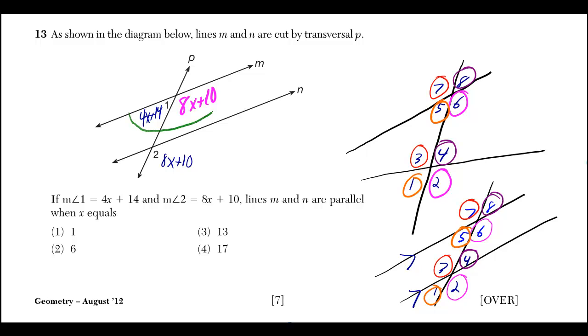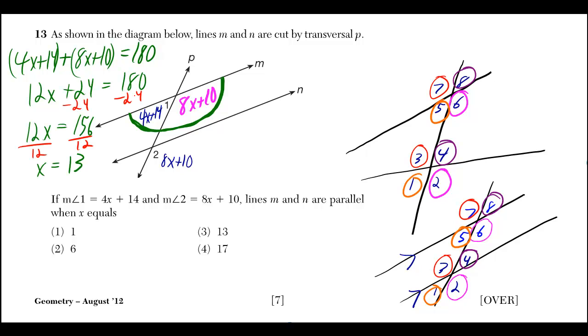Those two angles being adjacent and on the same line means they'll add up to be half a circle, and half a circle is 180 degrees. So 4x plus 14 plus 8x plus 10, when I add them up must come out to 180. So 12x plus 24 must equal 180, which means 12x is equal to 156, which means x must be 13.